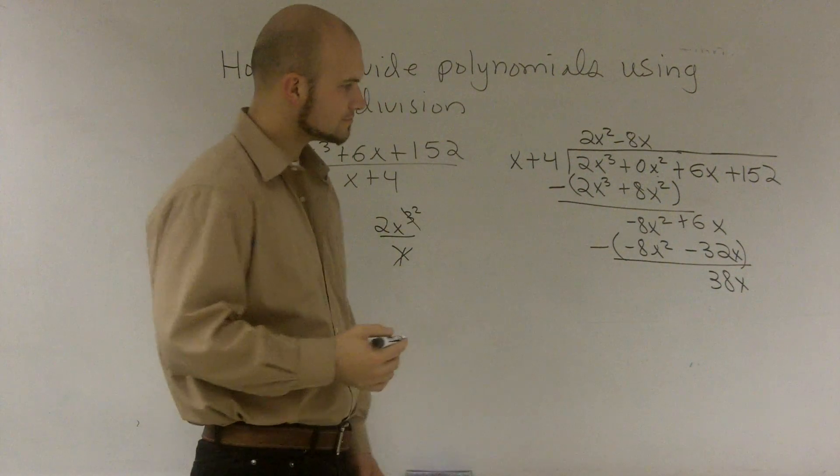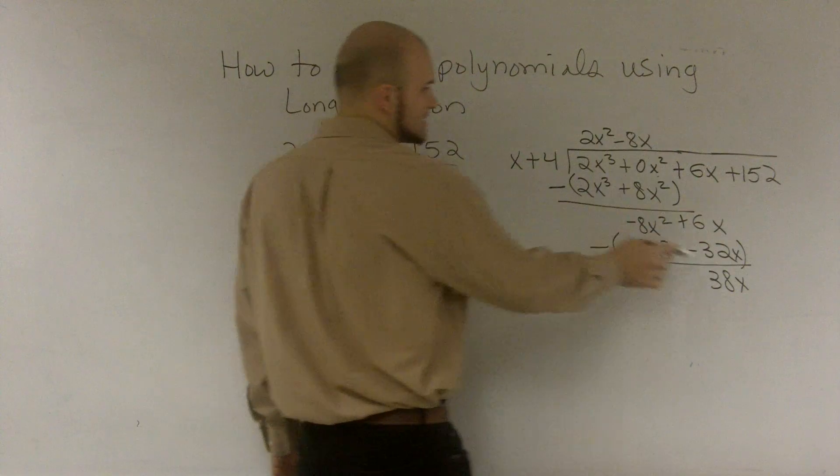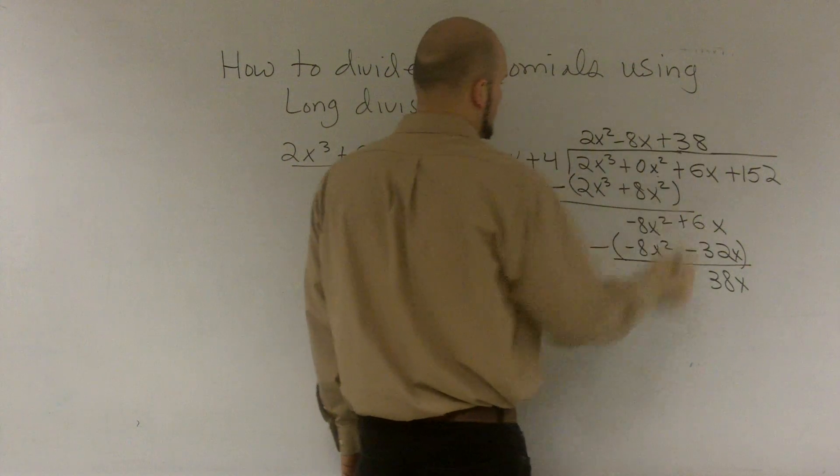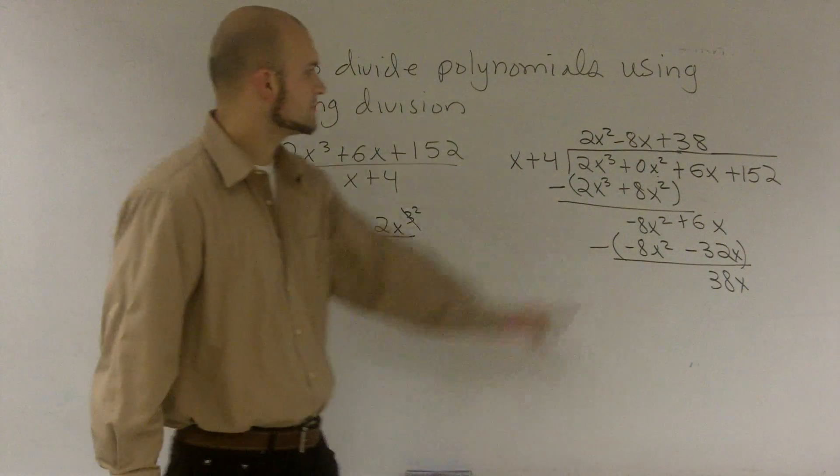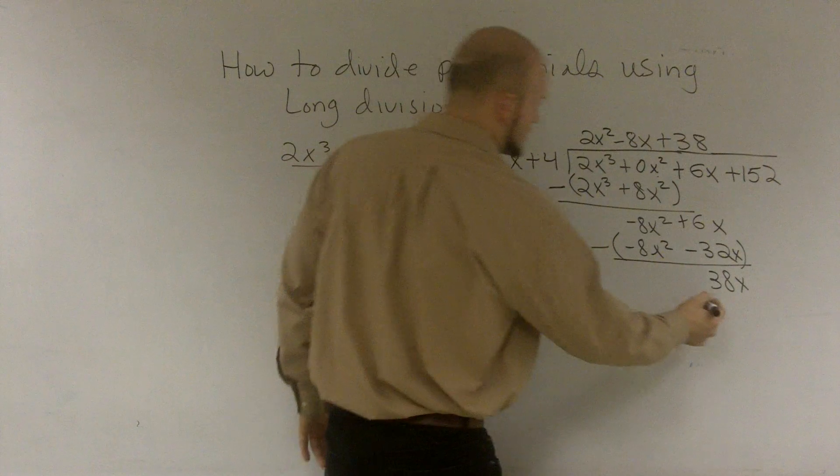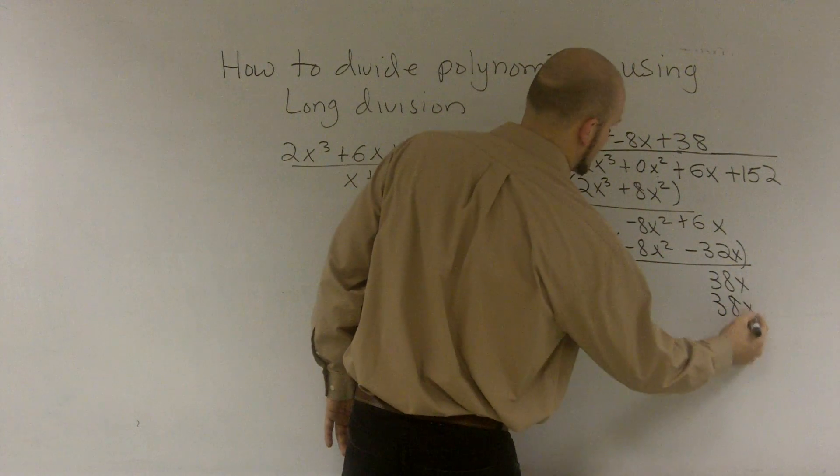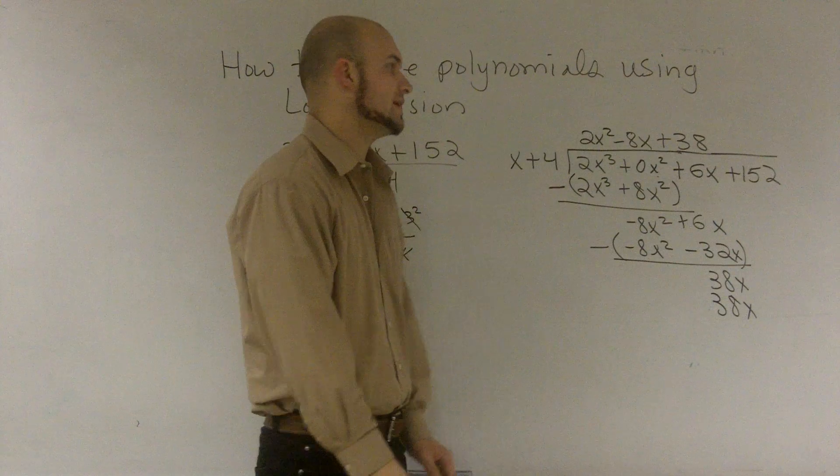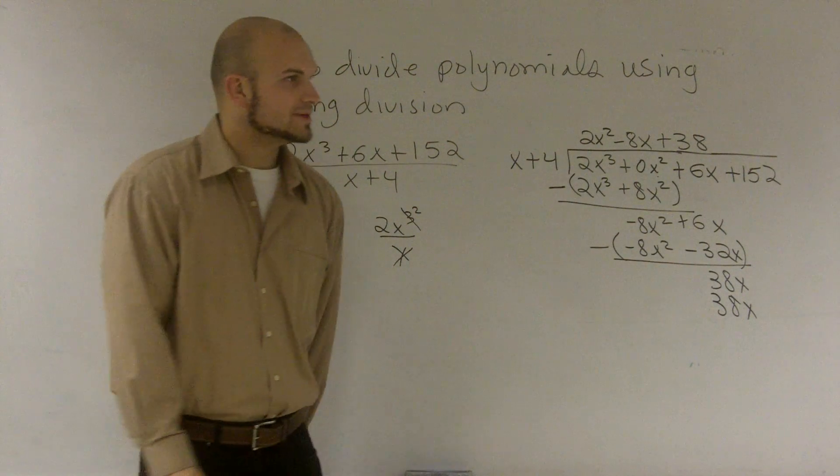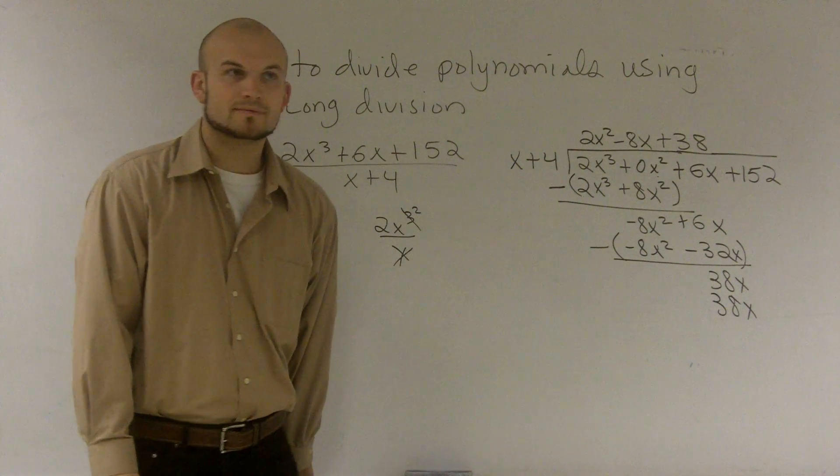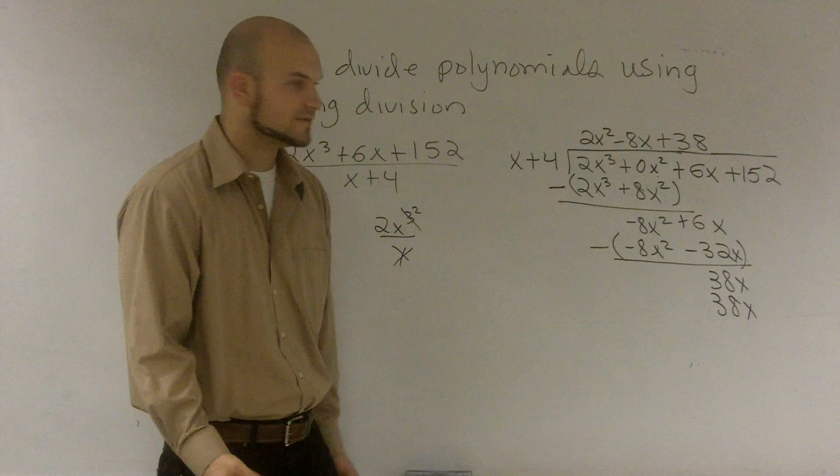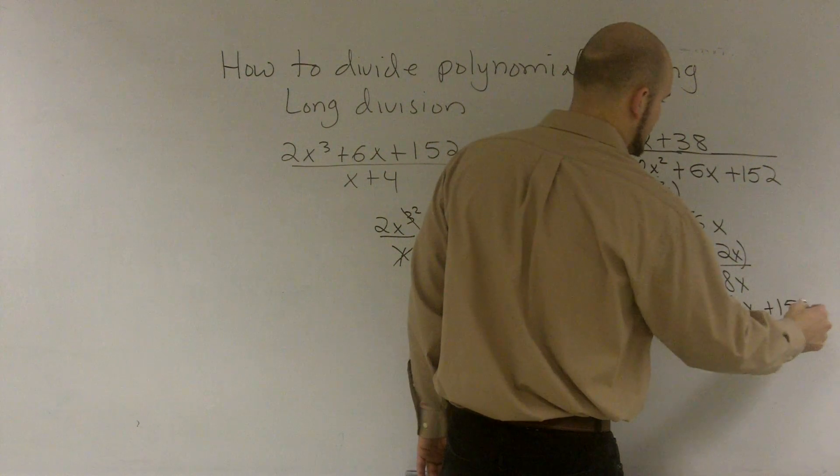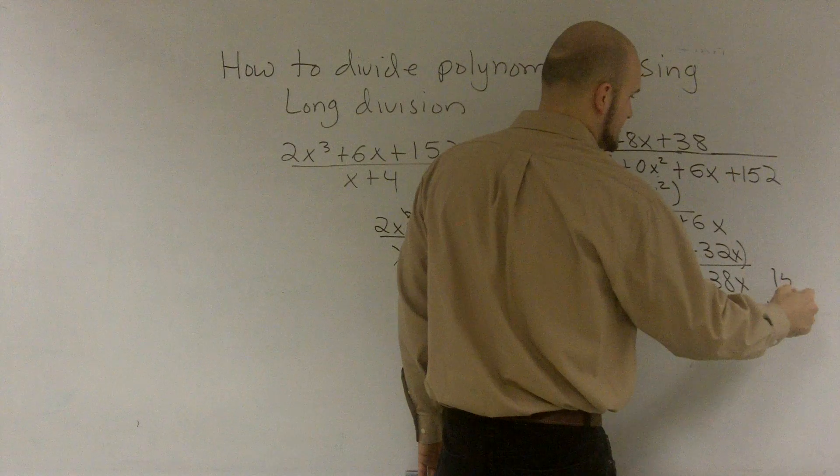X goes into 38x, 38 times. 38 times x is 38x. 38 times 4, well 38 plus 38 is going to be 76, right? And 76 times 2 would be 152. So that's going to be a positive 152. I drop down my 152.